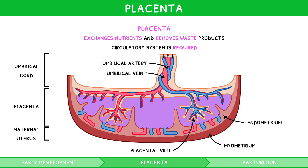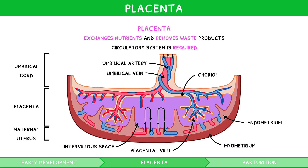Placental villi work to increase surface area and increase in number as fetal demand increases. Within each placental villus, maternal blood flows in the intervillus space rather than being confined in vessels, whereas fetal blood flows in capillaries close to the villus surface. The cells separating the two are termed the chorion, or placental barrier, and it is selectively permeable and around 5 micrometres wide.